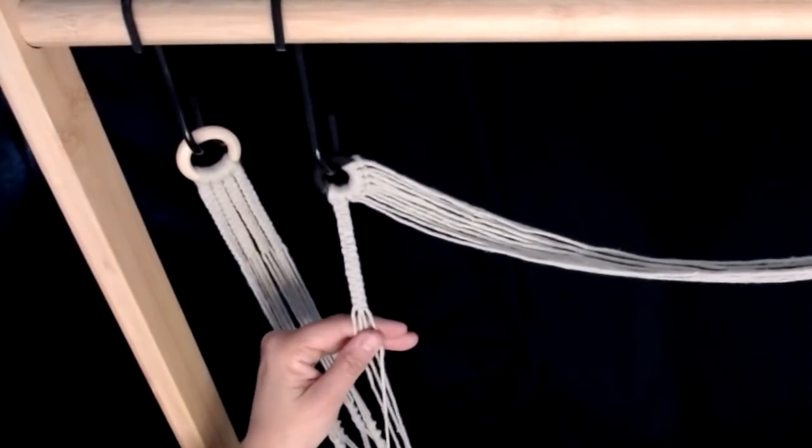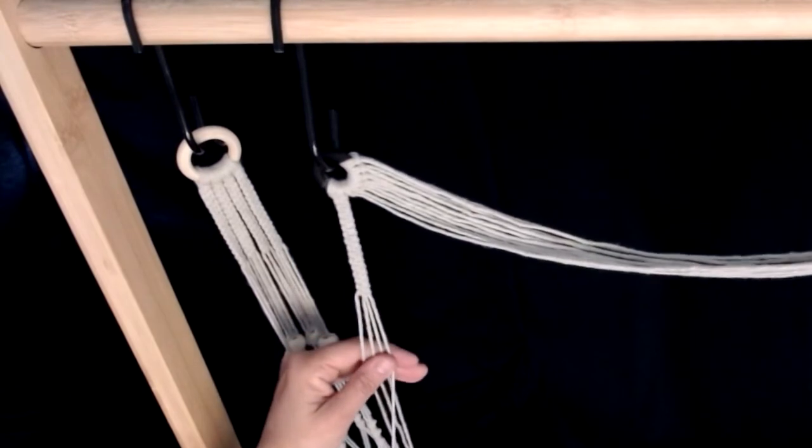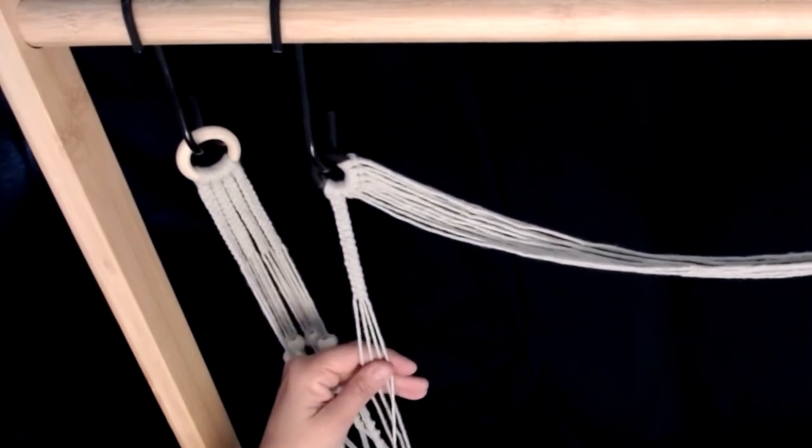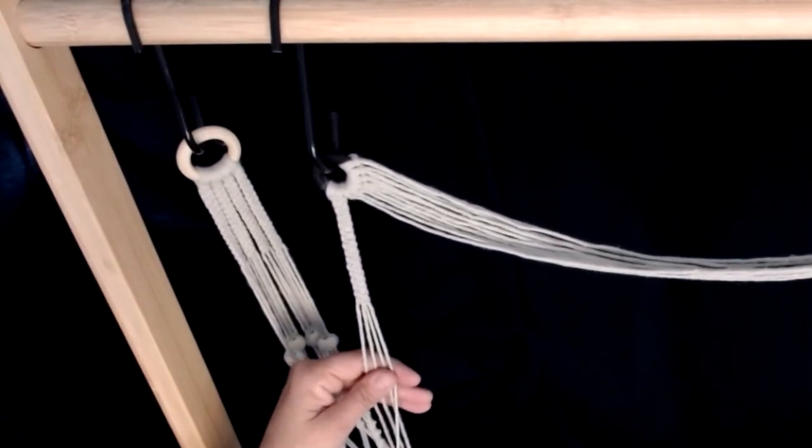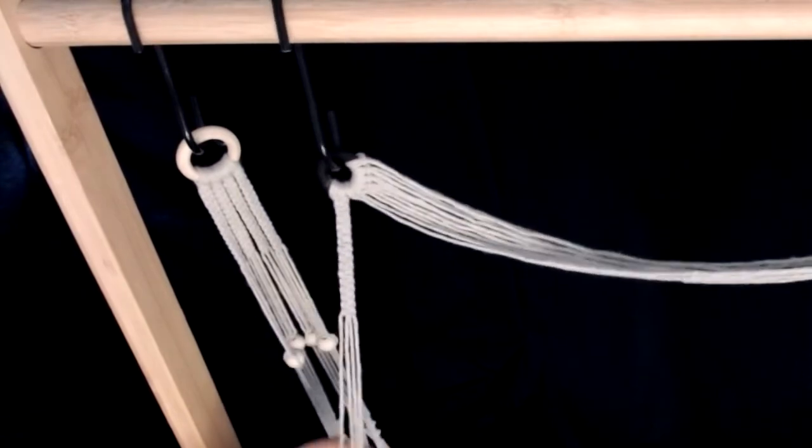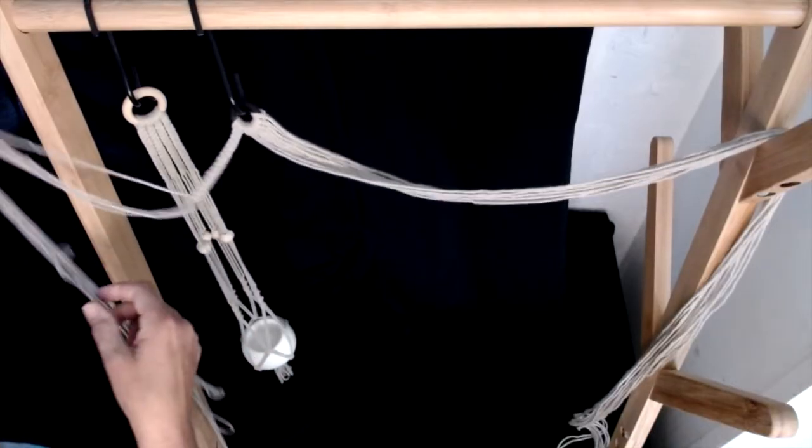So that's my 15 square knots finished. It's important to remember that you tighten your knots as you go, as it's very difficult to go back and do that later. I'm now going to put this one to the side and grab my next group of four strands.